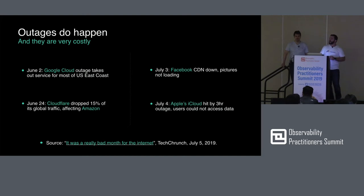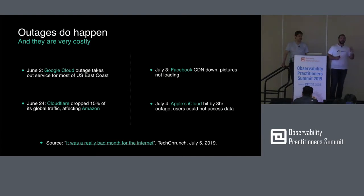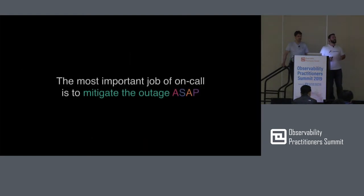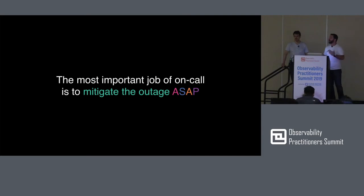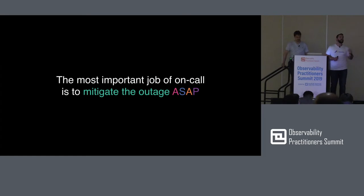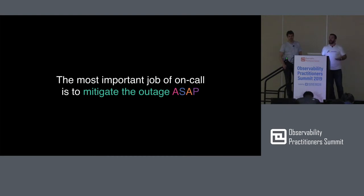If you're on call, you have to deal with these issues — quick show of hands, about 40-50% of people here are on call today. As part of being on call, one of the most important things you need to do is mitigate the issue as quickly as possible. Sure, you want to know why it happened and prevent it from recurring, but as an on-call person, you want to mitigate as quickly as possible because it's impacting your business, potentially costing a lot of money, and impacting end users who expect the service to be available all the time.